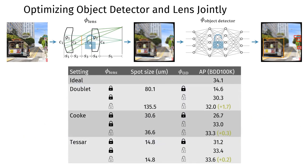At the end of the optimization process, the average spot size of each lens is similar or worse than at the beginning, but the object detection performance is increased.